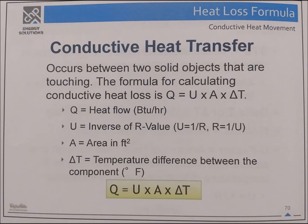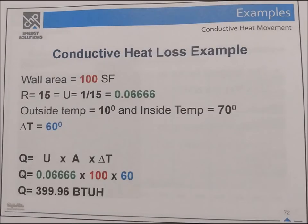A is the area in square feet and delta T is the temperature difference in degrees Fahrenheit. So the formula is Q equals U times A times delta T. Conductive heat loss example: Wall area equals 100 square feet; R equals 15, so U equals 1 divided by 15 equals 0.0667. Outside temperature is 10°F, inside is 70°F, so delta T equals 60°F. Q equals 0.0667 times 100 times 60 equals 399.96 BTUH.